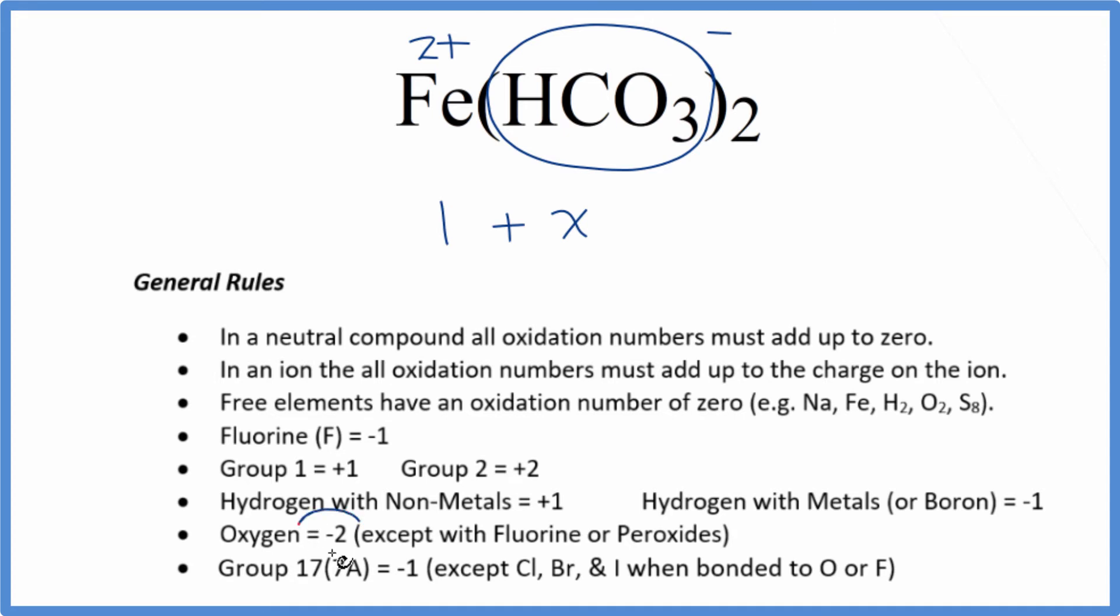Since this is the bicarbonate ion, all the oxidation numbers add up to the charge on the ion. All of this equals negative one. So we have 1 plus x minus 6 equals negative 1. That's x minus 5 equals negative 1. Add five to both sides, and x equals positive four.